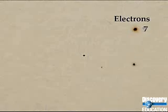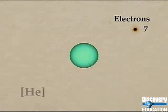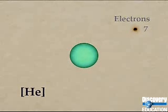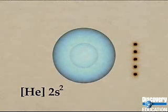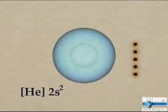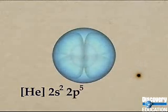Helium has two electrons distributed among one orbital shell. Fluorine has seven more electrons than helium. The first two electrons are found in the sphere-shaped 2s orbital shell. The final five electrons are distributed among three lobe-shaped 2p orbitals.